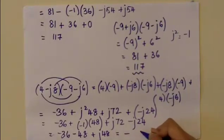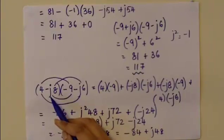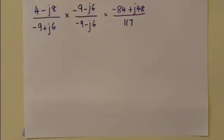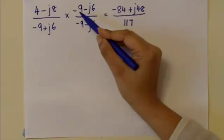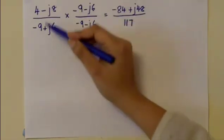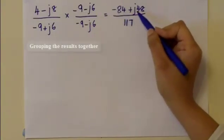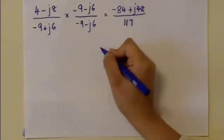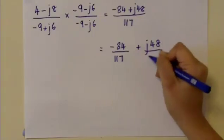So the answer when you multiply the numerator by the conjugate of the denominator is -84 + j48. The product of the denominator complex number by its conjugate is 117. Therefore, the final result can be written as (-84/117) + j(48/117).